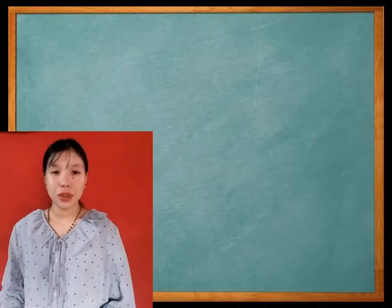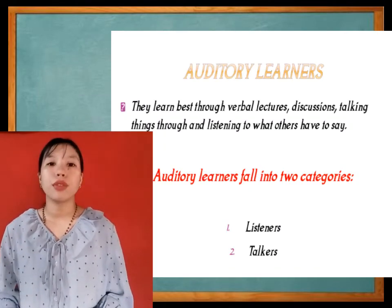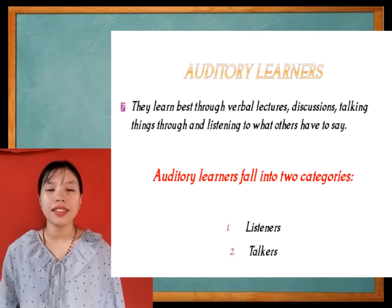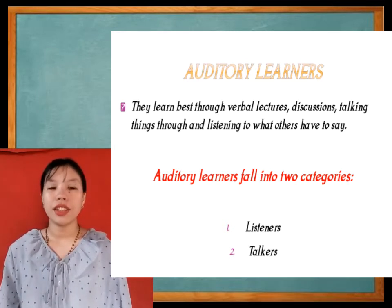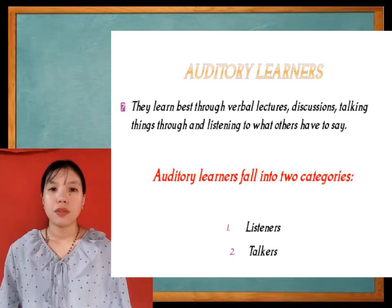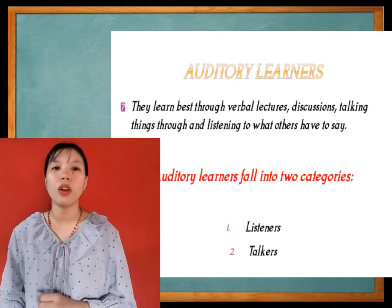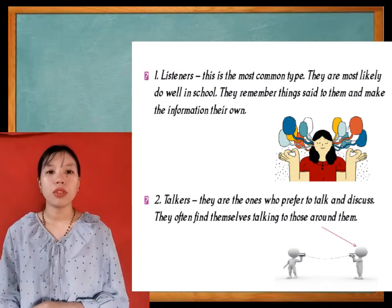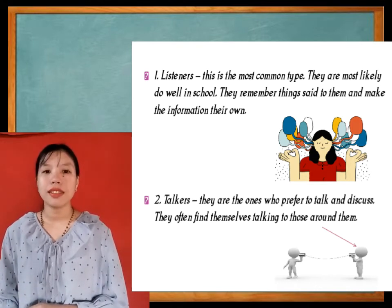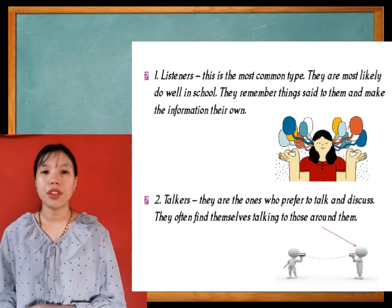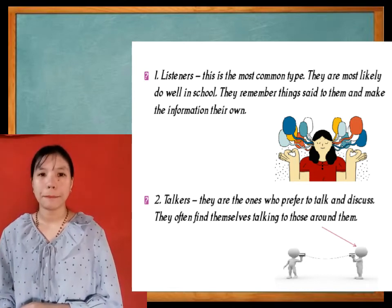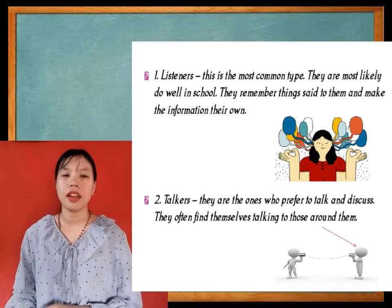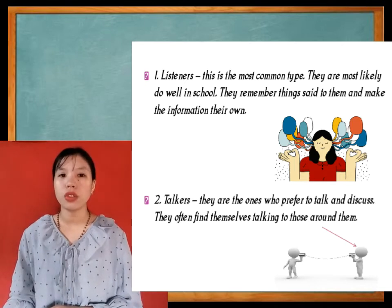Auditory learners learn best through verbal lectures, discussions, talking things through, and listening to what others have to say. Auditory learners fall into two categories: listeners and talkers. Listeners are the most common type; they are most likely to do well in school and remember things said to them. Talkers are the ones who prefer to talk and discuss, and they often find themselves talking to those around them.